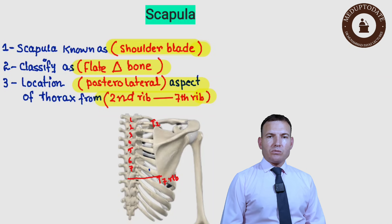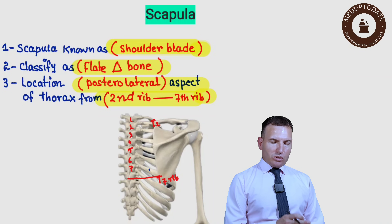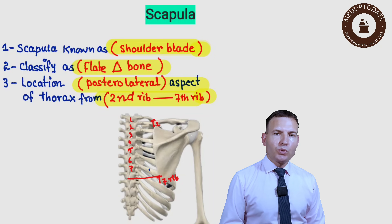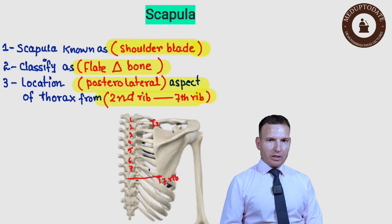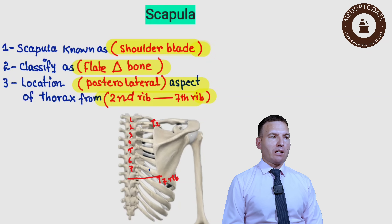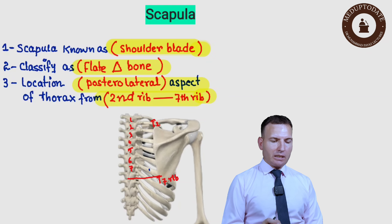In this lecture we will mainly focus on the scapula. The scapula belongs to the shoulder girdle and is the second bone in the shoulder girdle. The first one is the clavicle, which we already discussed — that video is available on the Mid-Up-To-Date channel.